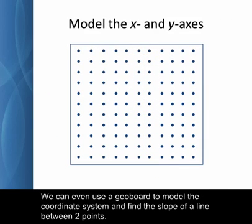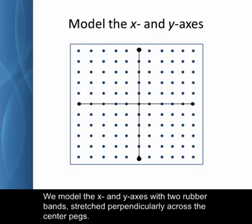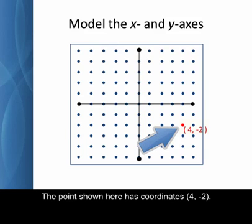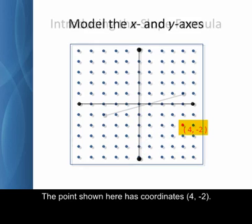We can even use a geoboard to model the coordinate system and find the slope of a line between two points. We model the x and y axes with two rubber bands stretched perpendicularly across the center pegs. Now we have our familiar Cartesian coordinate system. The point shown here has coordinates four, negative two.